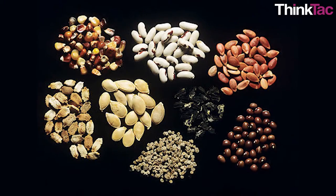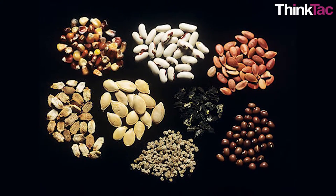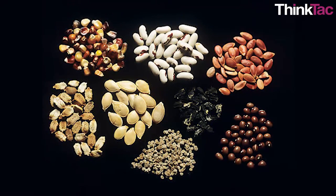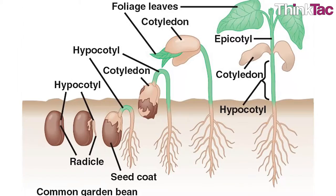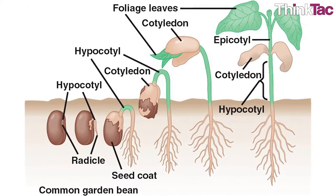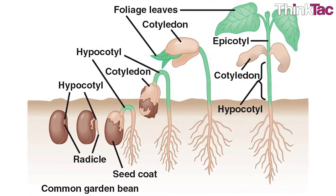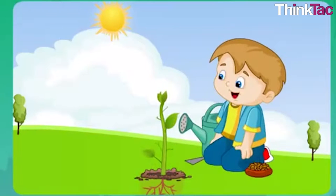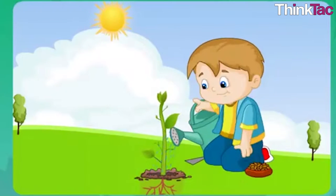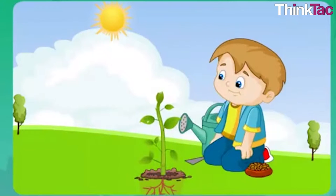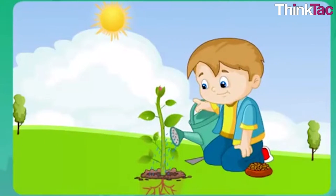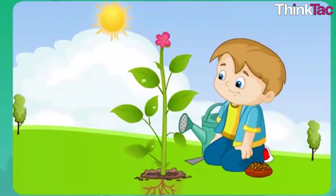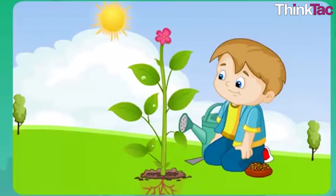Different seeds have different requirements of water and oxygen, hence they germinate at different rates. Seeds of some plants germinate within two days while others may take weeks. Germination of seeds is the first step in the life cycle of most flowering plants. Only after this step can the plant grow and develop to become a full-grown plant or tree. There are some kinds of plants and trees that do not produce seeds; their life cycle will be covered later in your curriculum.